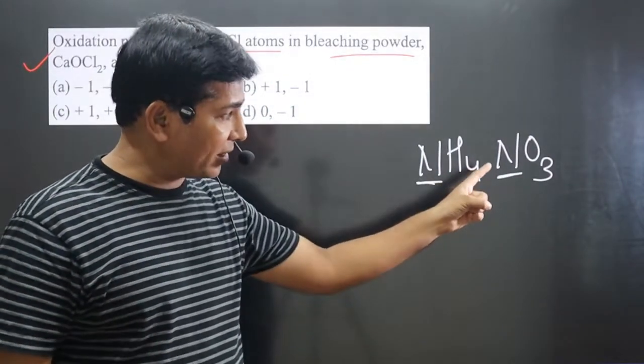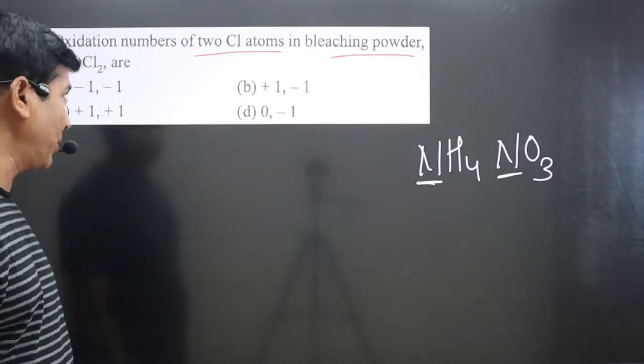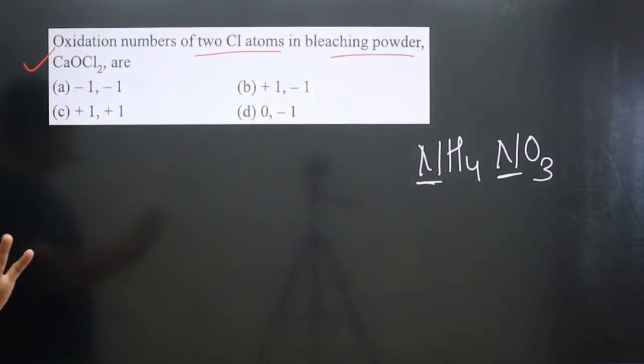So same element are there, but they are present in different environment. That's why they will show different oxidation number. Always keep in mind. So that's why in this case, we draw the structure.